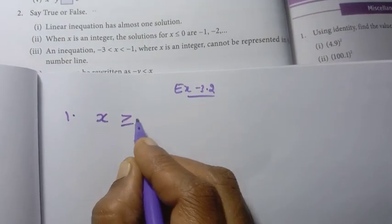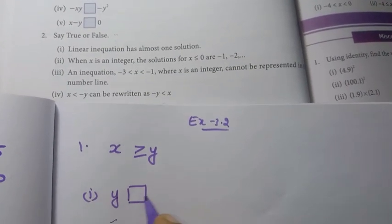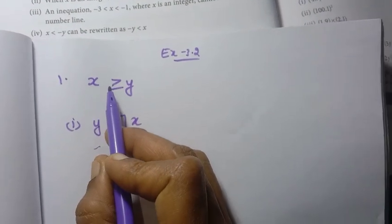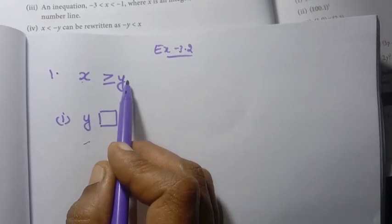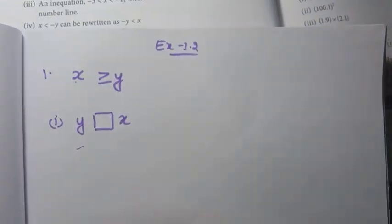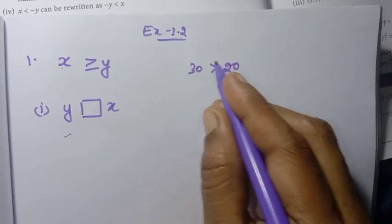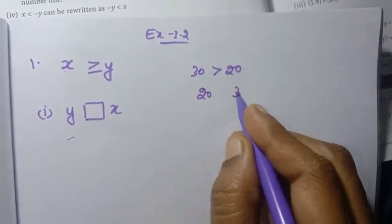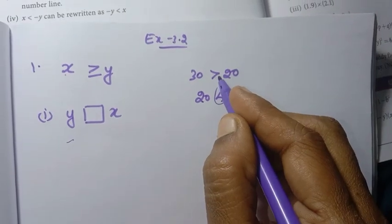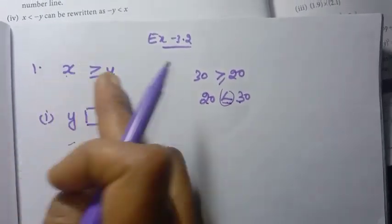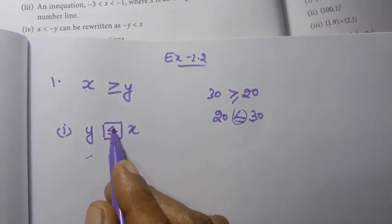Now, fill in the blanks with suitable inequality signs. Given that x is greater than or equal to y. First sum: y box x. x is greater than or equal to y — the numbers are interchanged. Like we saw: 30 is greater than 20 means 20 is less than 30. So when the number is interchanged, the symbol changes. Therefore y is less than or equal to x.